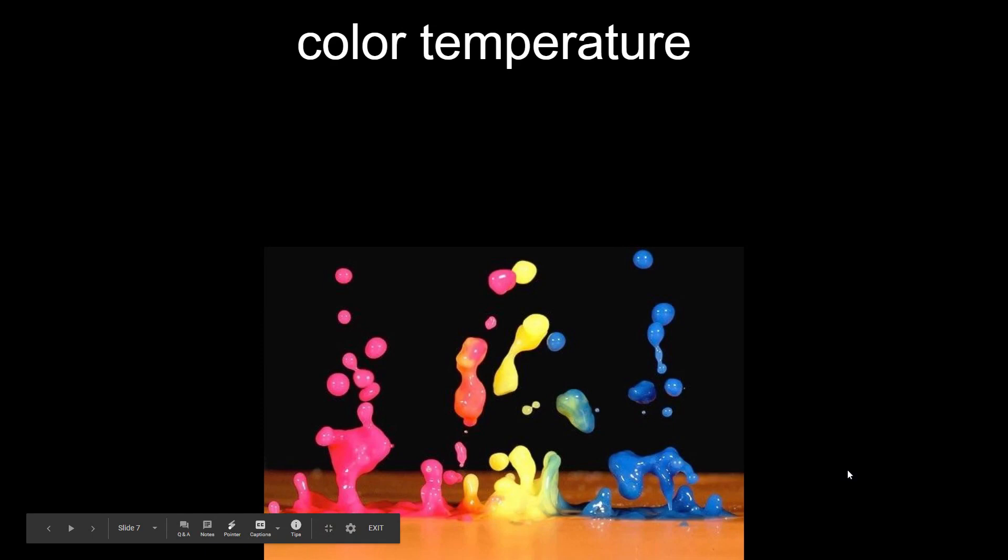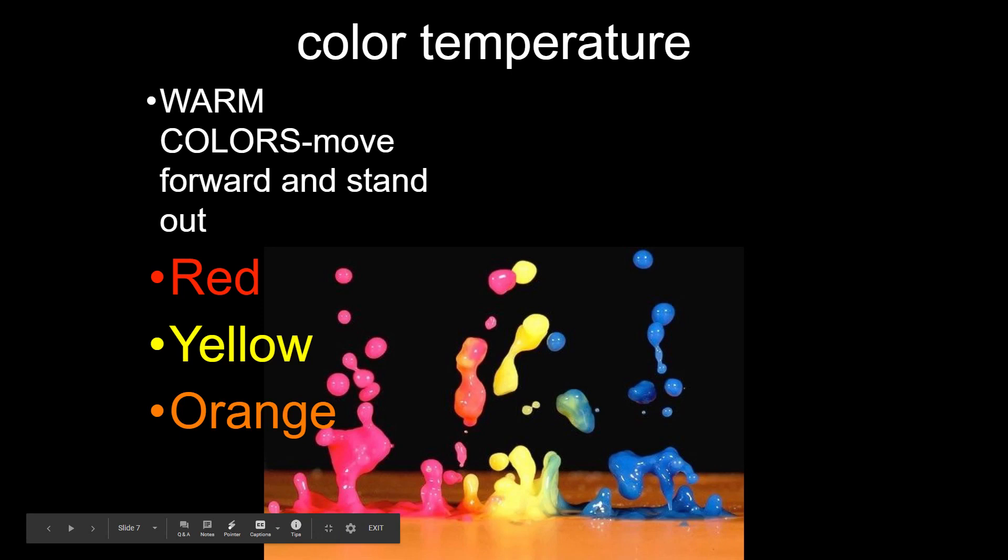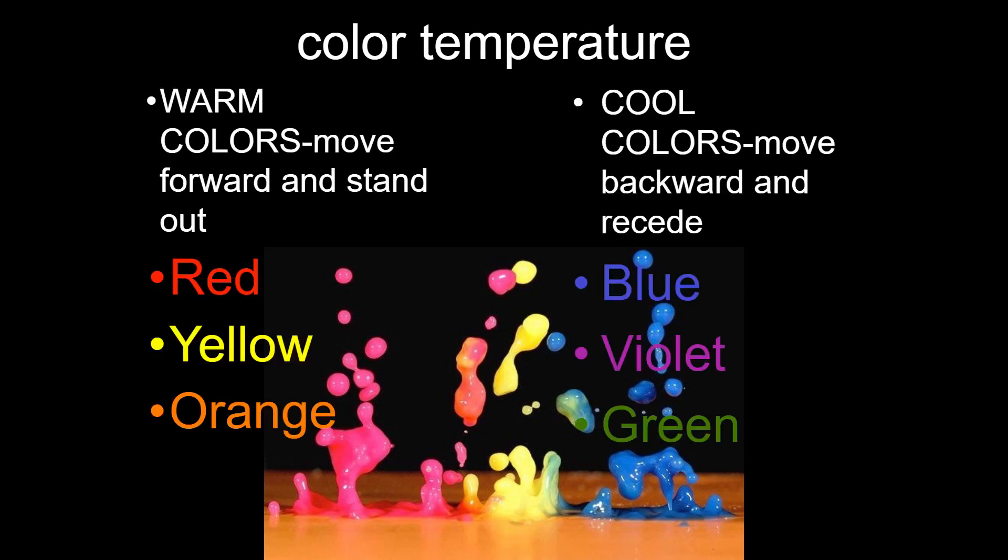Color temperature—can colors have temperatures? Absolutely they can. Warm colors: what do we think of with warm colors? Reds, yellows, oranges. These colors are going to move forward and really stand out in your art piece. They're going to elicit a sense of warmth and belonging, comfort, or intensity. If you do striking reds or slashes of yellow and orange across your piece, it's going to draw a lot of drama.